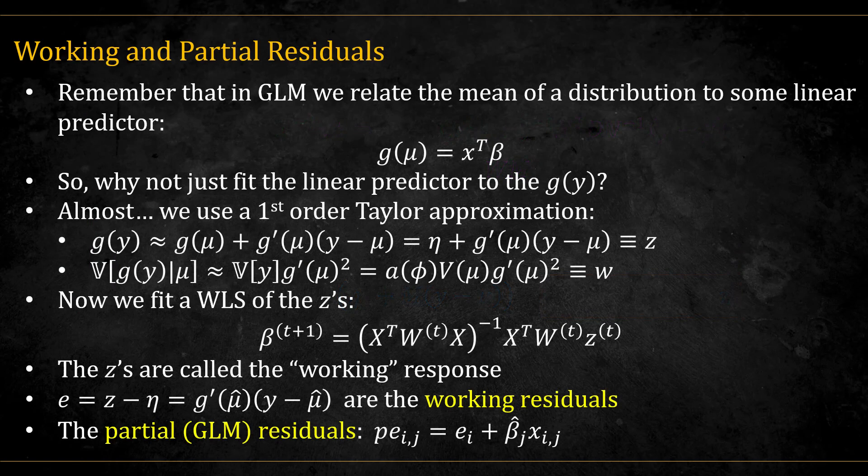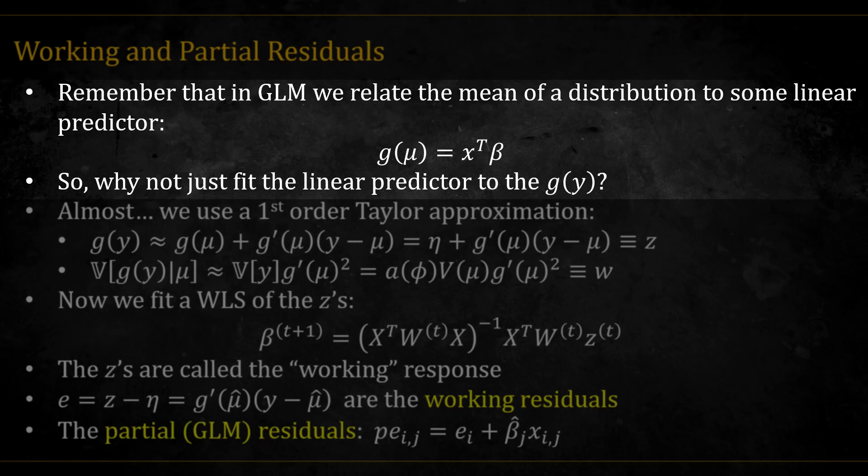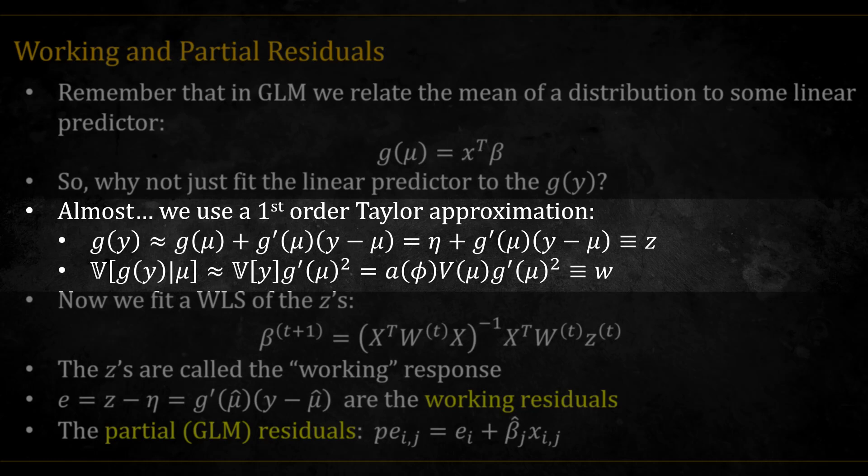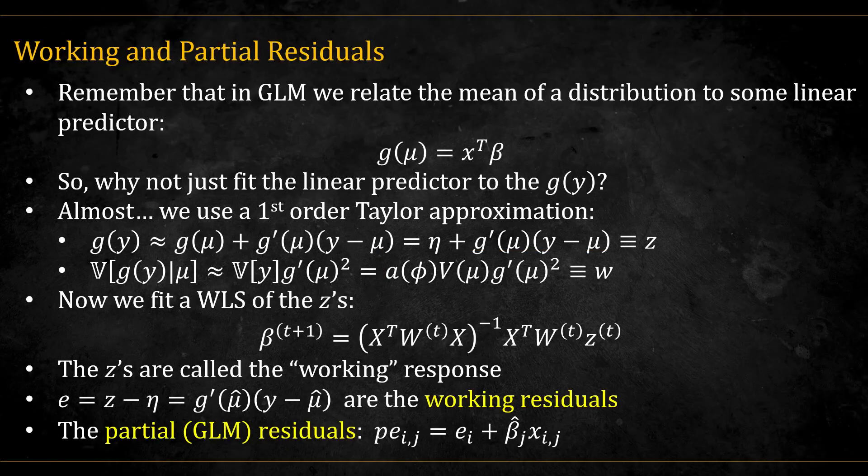Here's another way to look at this. Remember that in GLM we relate the mean of a distribution to some linear predictor. So, why not just fit the linear predictor using g(y)? Almost... we use a first order Taylor approximation: g(y) ≈ g(µ) + g'(µ)(y - µ) ≡ z. Now we fit a WLS of the z's: µ̂^(t+1) = (X^T W^(t) X)^-1 X^T W^(t) z^(t). In each iteration, we take the mu's to be given according to the current beta estimates. So we can also estimate the variance of this link to be approximately this thing over here, which we denote by w. Again, this is the same w as before. Now we use weighted least squares on the z. Notice that both the w's and the z's depends on the betas.